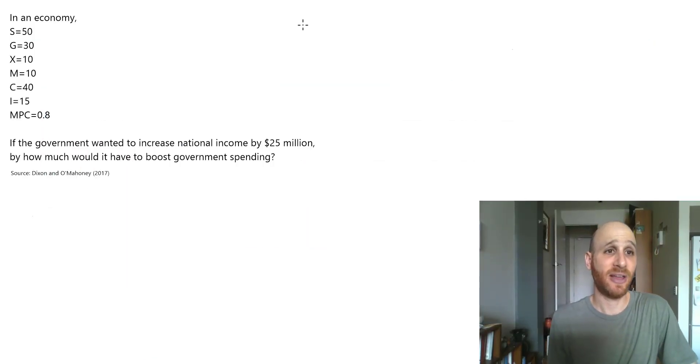In this video we're looking at the following question which comes from a textbook by Dixon and Omani. In an economy we have: savings equals 50, government equals 30, net exports is zero, consumption is 40, investment is 15, and our MPC is 0.8. These are all very useful figures to know.